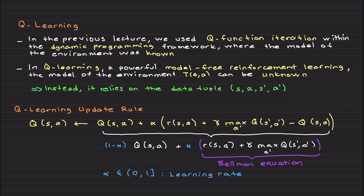Welcome back. In the previous lecture, we used Q function iteration within the dynamic programming framework where the model of the environment was known. So to do this Q function iteration, you need to compute S prime. And if you remember, S prime is TSA, so you need to know that transitioning function.